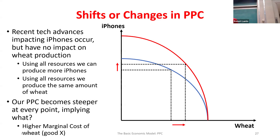That makes sense intuitively: if I now have new technology to produce that other good, when I stop producing it to produce the X good, I'm going to have to give up way more. So the cost of producing my X-axis good at every point has now become larger.